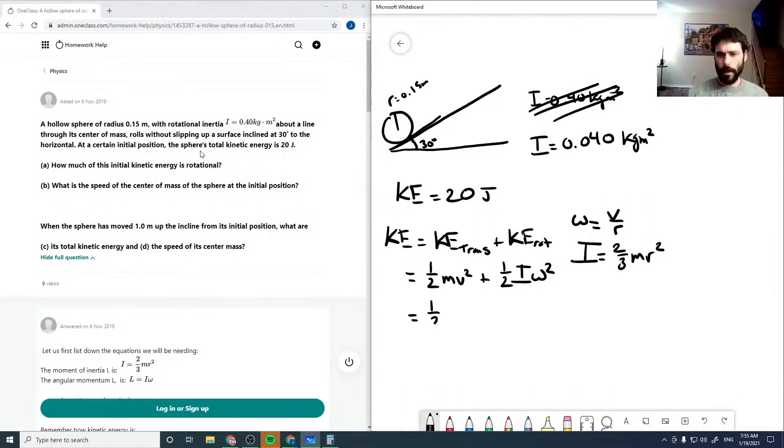So we can write this as one half mv squared plus one half two thirds mr squared times v over r squared. And I'm actually just going to rewrite this as KE trans. So then we can work this through here. So divide by that, one third m, the r squared is going to cancel, so v squared. So we get a third mv squared.